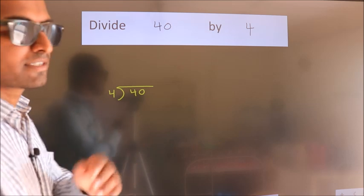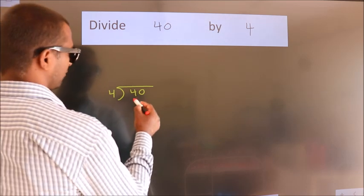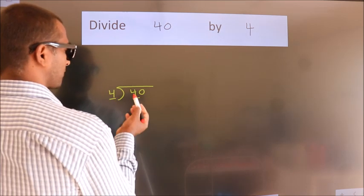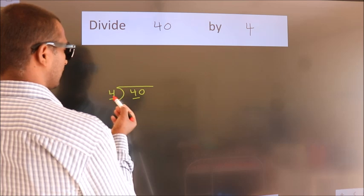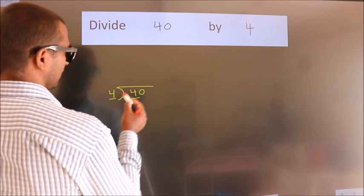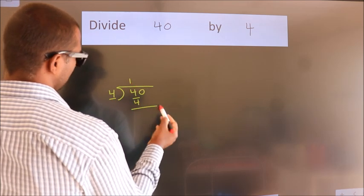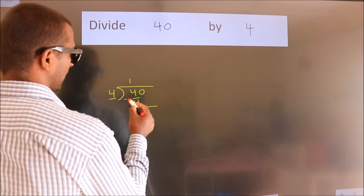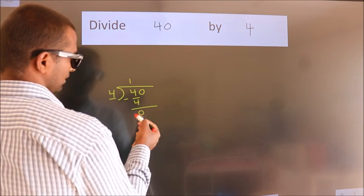Next. Here we have 4, here 4. When do we get 4? In the 4 table. 4 once is 4. Now we should subtract. We get 0.